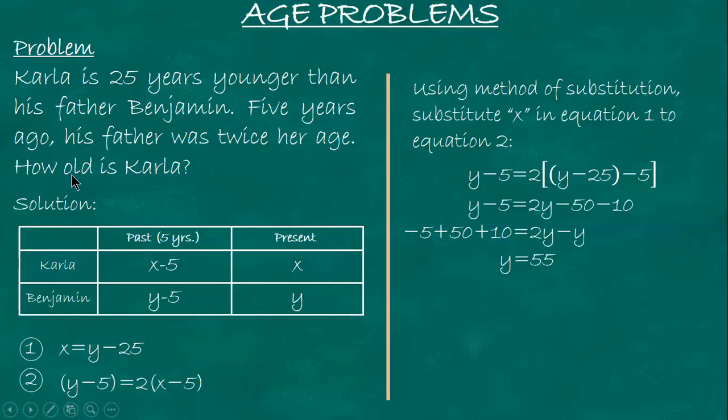Transpose: 50 plus 10 becomes positive. Transpose y to the right as negative. And y equals 55. Since the question asks how old is Carla - present age of Carla - to solve for x, substitute y equals 55 into equation 1. From equation 1: x equals 55 minus 25. Therefore, the present age of Carla is 30. Carla is 30 years old.